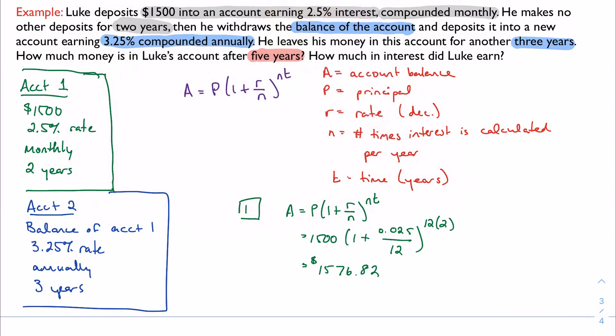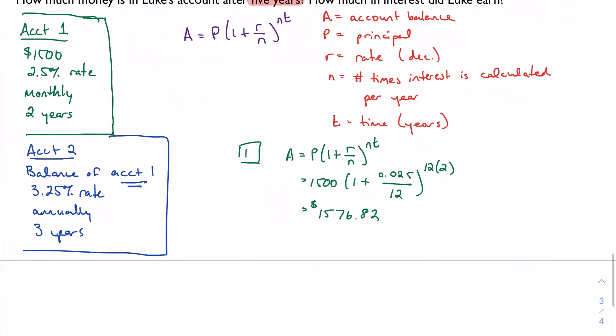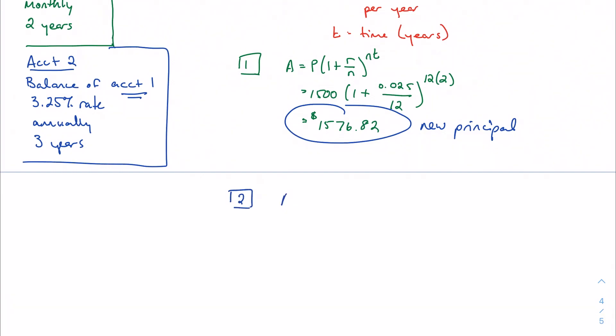Well, in account two, he takes the balance of account one. So this now becomes the new principal. So in account two, it's still compound interest. And now we have an interest rate of 3.25% compounded annually. Things that happen annually happen once a year. Your birthday is annual. It happens once a year for three years. So t is 3. And again, this is actually a little more straightforward than maybe I thought. It really is just ultimately plugging in into the formula.